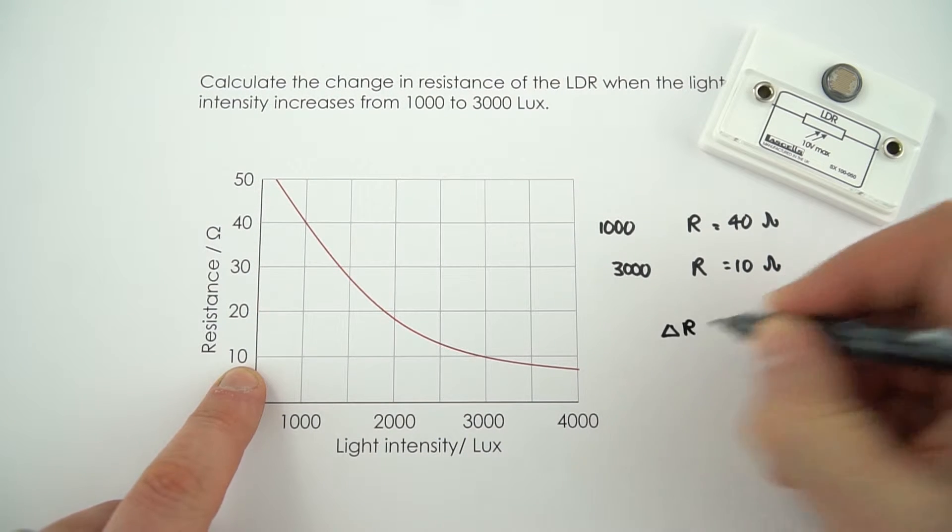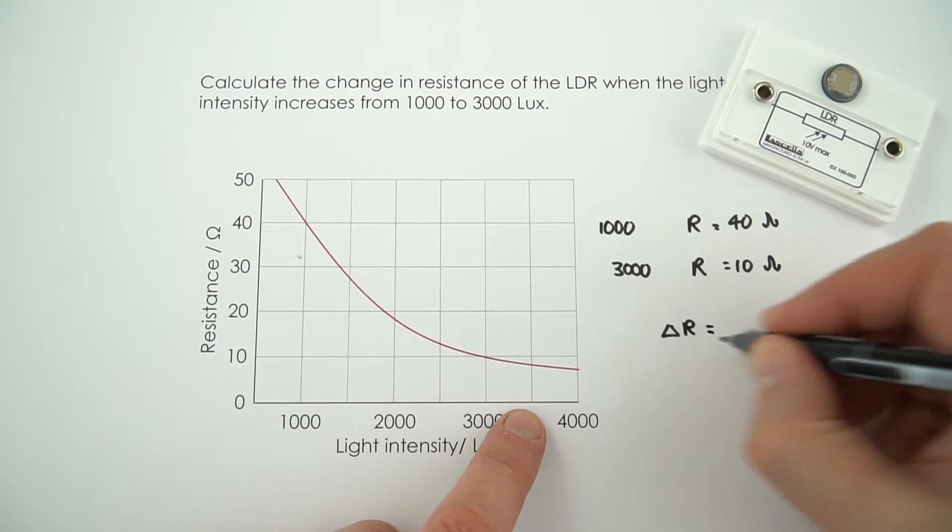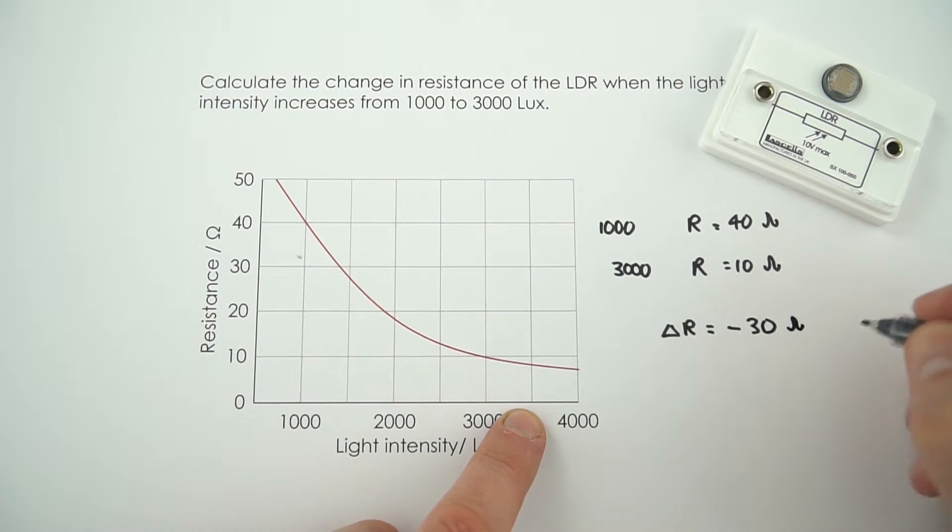So what's the change in resistance? Well, it started at 40, it ended at 10, and that means the resistance actually decreases, so I'm going to put a minus there, by 30 ohms.